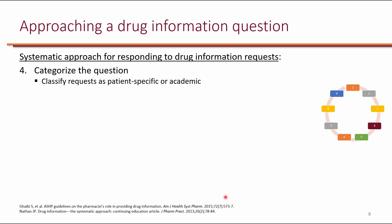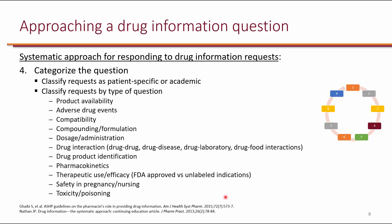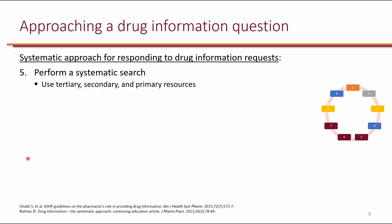The fourth step is to categorize the question. You can classify requests as patient specific or academic. Patient specific questions require patient specific characteristics, whereas academic questions are more general and broad and can be applied to multiple patients. It is also very helpful to classify requests by type of question, as you would be more likely to find the most optimal resource. For example, there are specific resources for compatibility, drug interactions, and pharmacokinetics. The fifth step is to perform a systematic search using tertiary, secondary, and primary resources, which will be explained in learning objective number three.